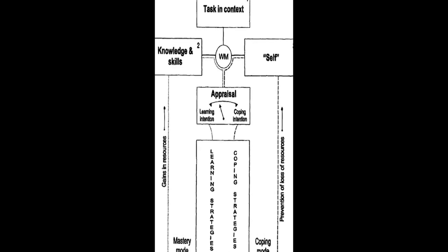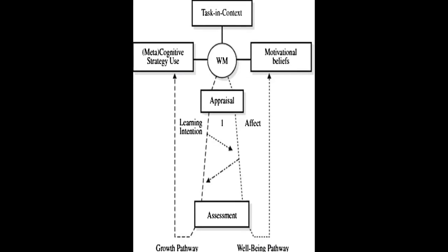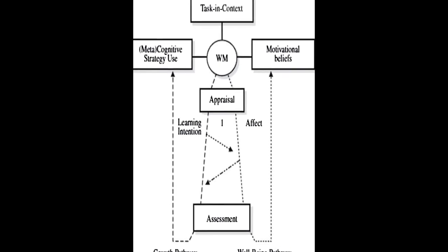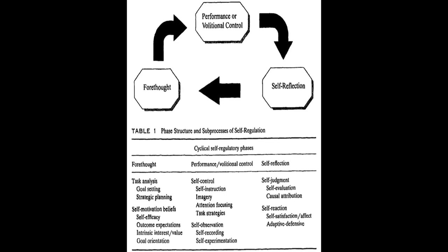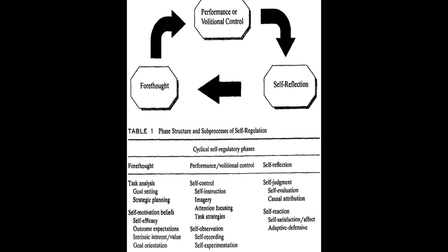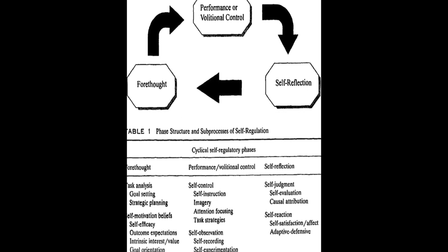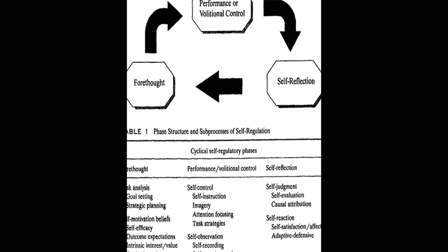Six models of SRL are analyzed and compared in this paper: Zimmerman, Bocarts, Winn and Hadwin, Pintrich, Efklides and Hadwin, Jarvella, and Miller. Each model is explored in detail, including its history, description, empirical support, and instruments constructed based on the model.